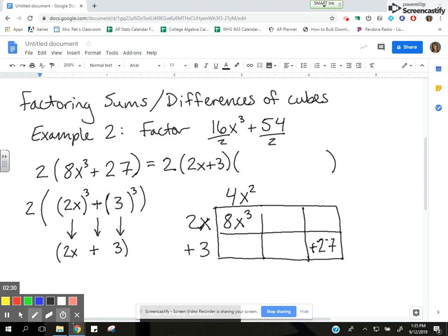Then if I take my 4x² and multiply it by 3, I'm going to have a positive 12x² down here. Now I can also look on this side of my box and say: what times 3 gives me 27? It's going to be a positive 9. And then I can take that positive 9 times 2x and get a positive 18x inside the box.